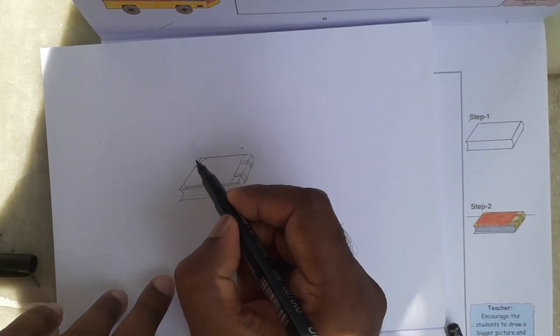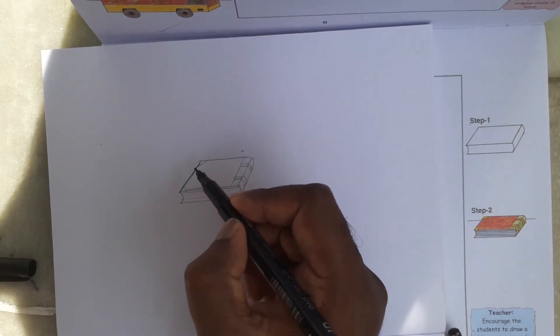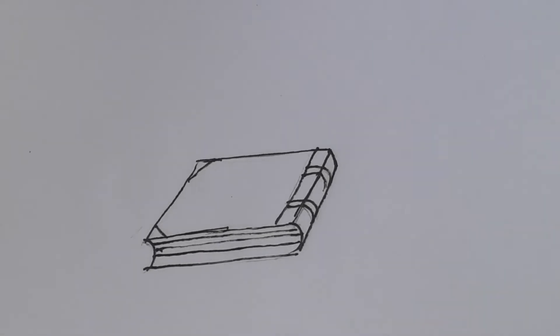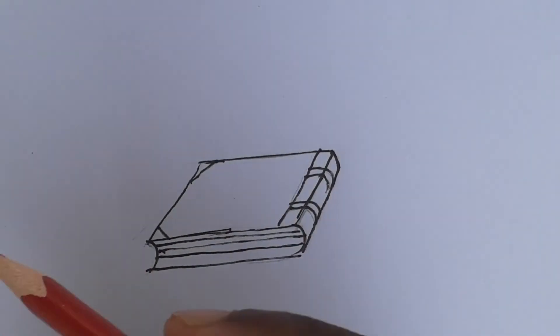You can use a sketch pen for the outline. Now we will start coloring it. I am going to use pencil colors.